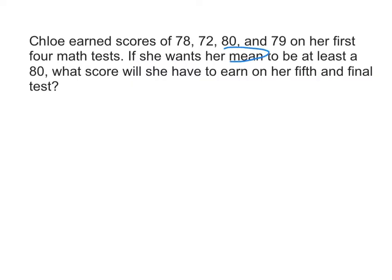So we're looking at mean here, and mean is the average, which means you add up all the numbers and divide by how many you have. So Chloe's scores so far were 78 plus 72 plus 80 plus 79. And she's going to be taking one more test, and we don't know what she's going to get on that, so I'm going to call that X.